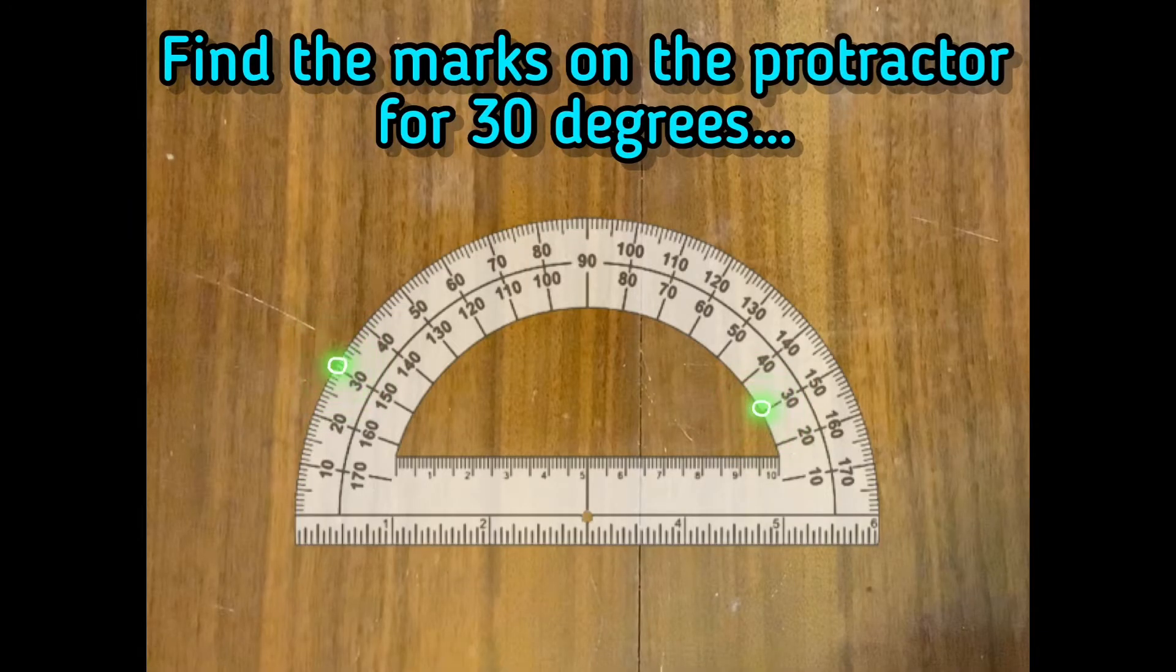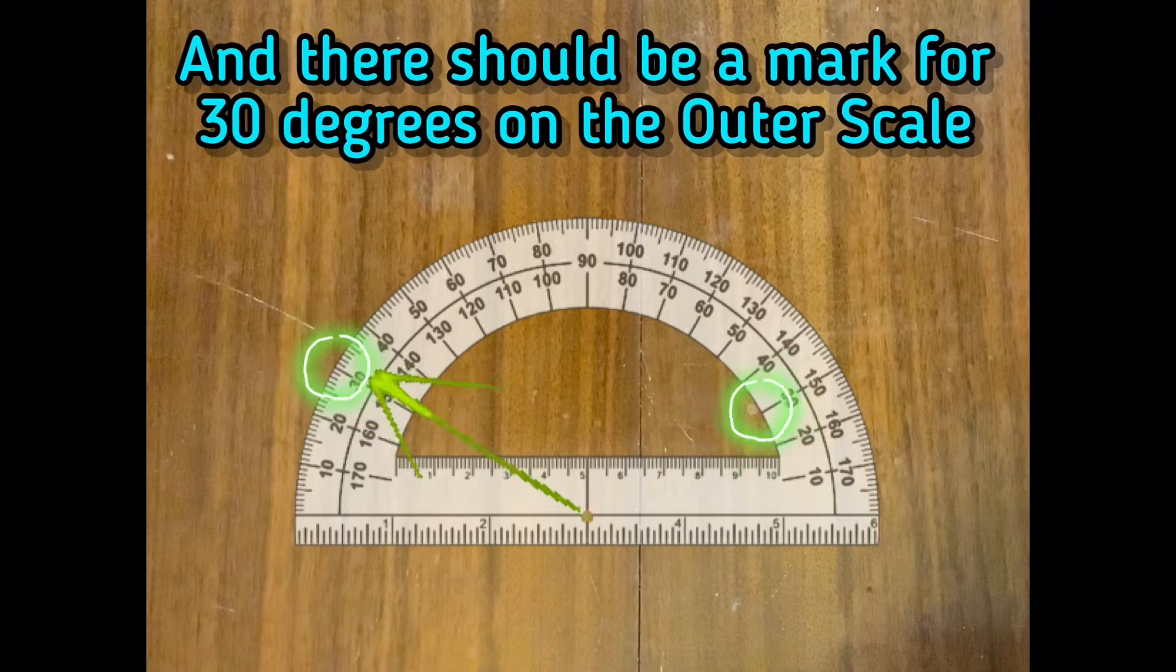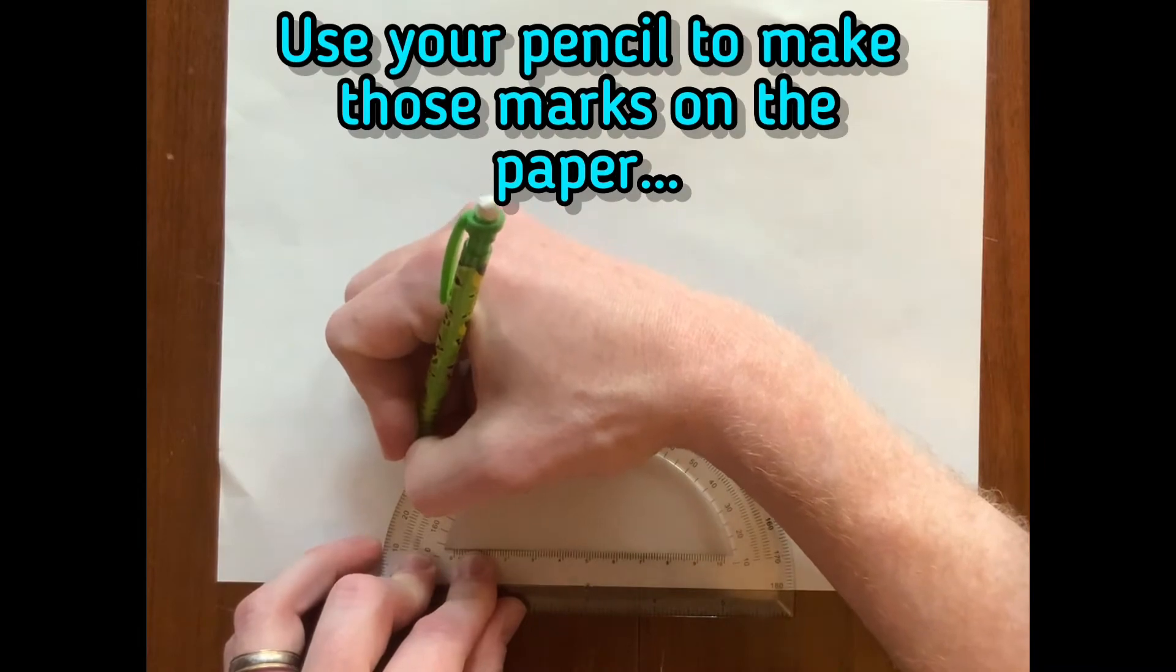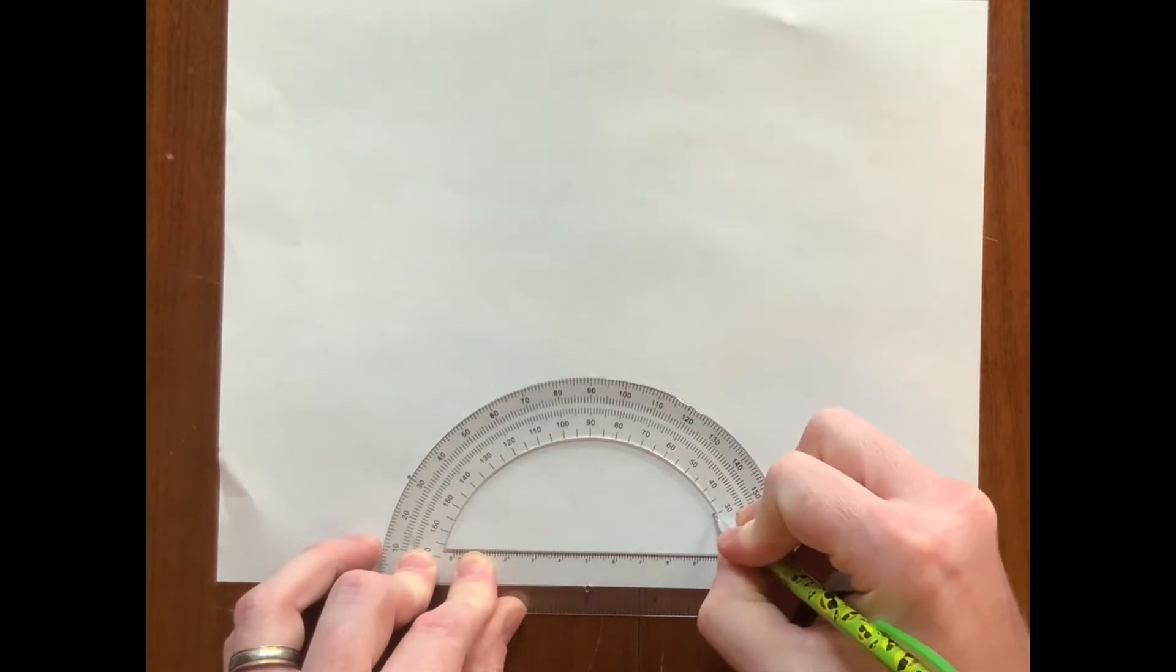Find the marks on the protractor for 30 degrees. There should be a 30 degree mark on the inner scale, and there should be a mark for 30 degrees on the outer scale. Use your pencil to make those marks on the paper. Make sure the origin of the protractor is still on the first mark.